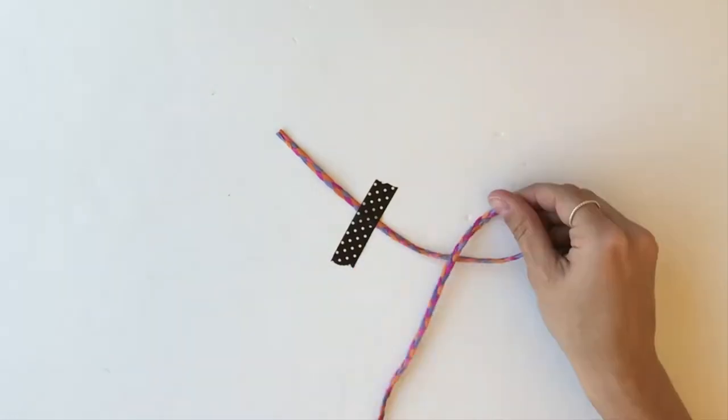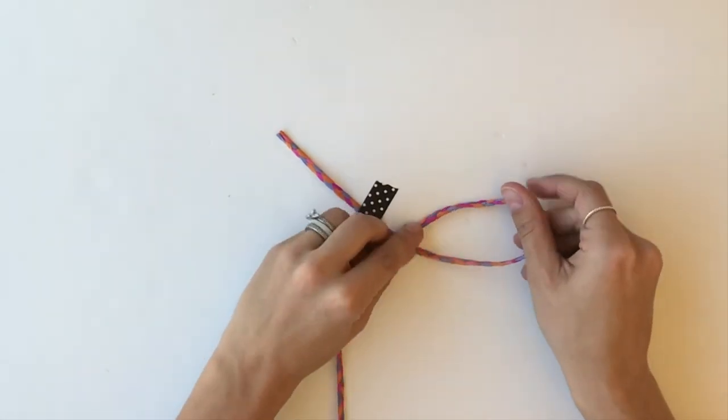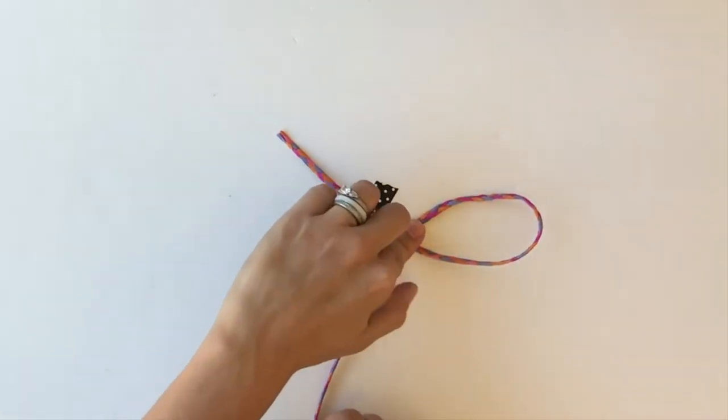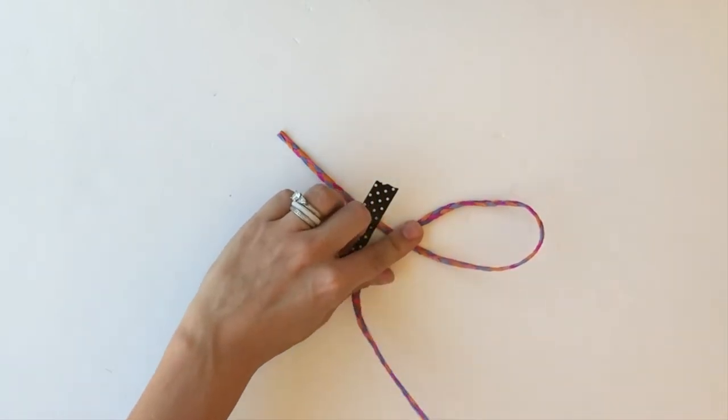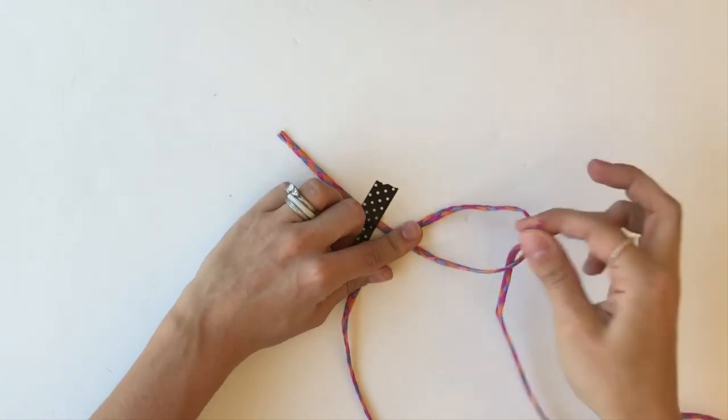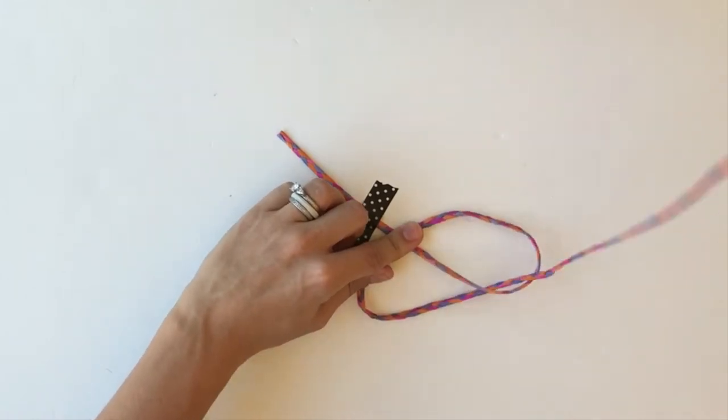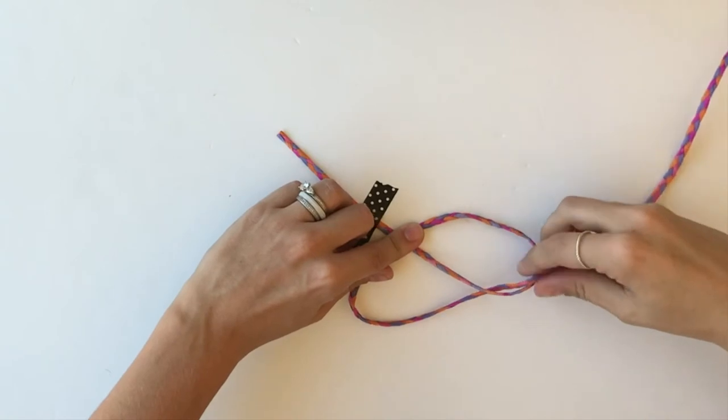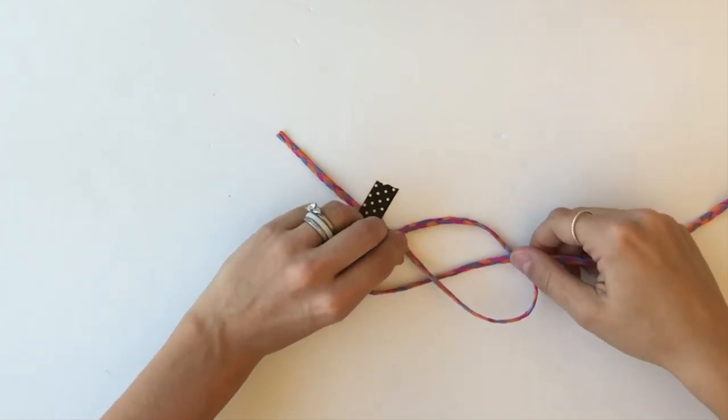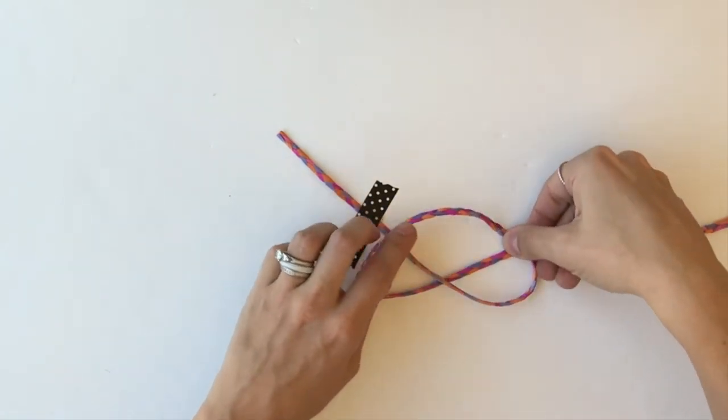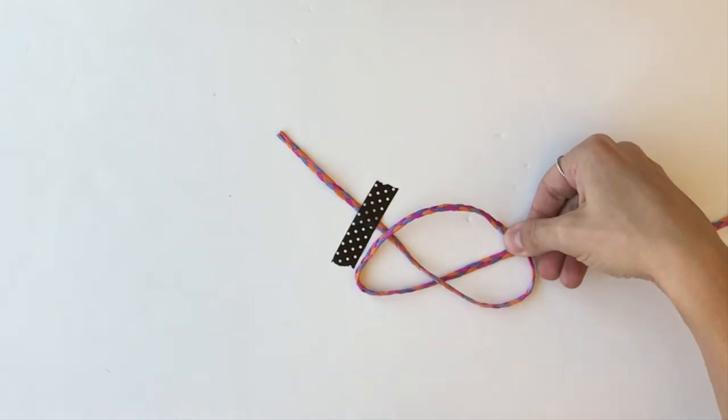The next thing I'm going to do is use this bottom piece and loop it through the little hoop that we have just created. As you can see, it's going to create a little bit of an upside-down pretzel shape.